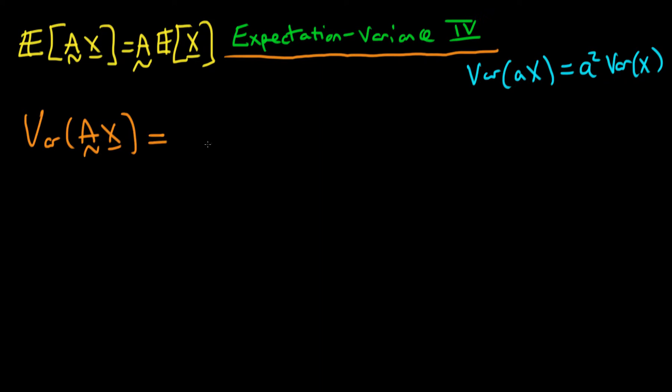So let's first remind ourselves of what it actually means to take the variance of a random vector. We defined it in the last video as being equal to the expectation of that random vector, which in this case is A times x minus its mean.